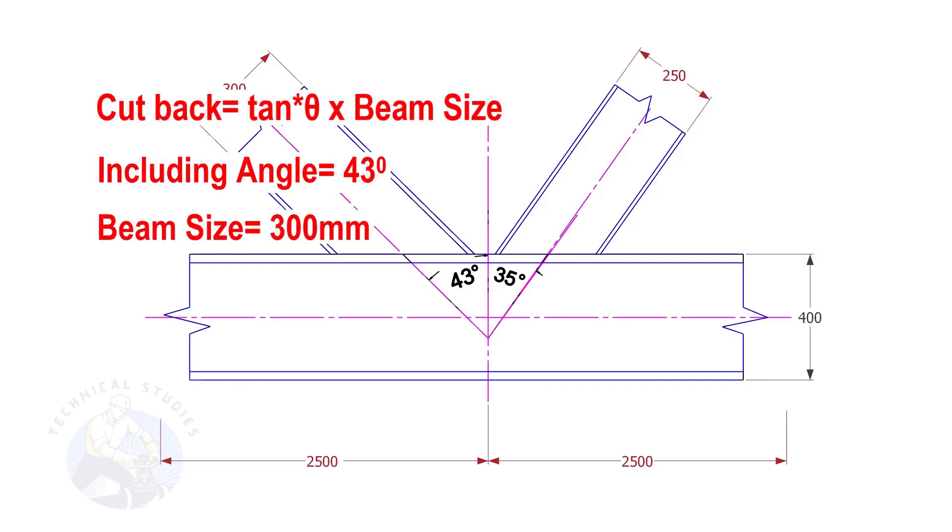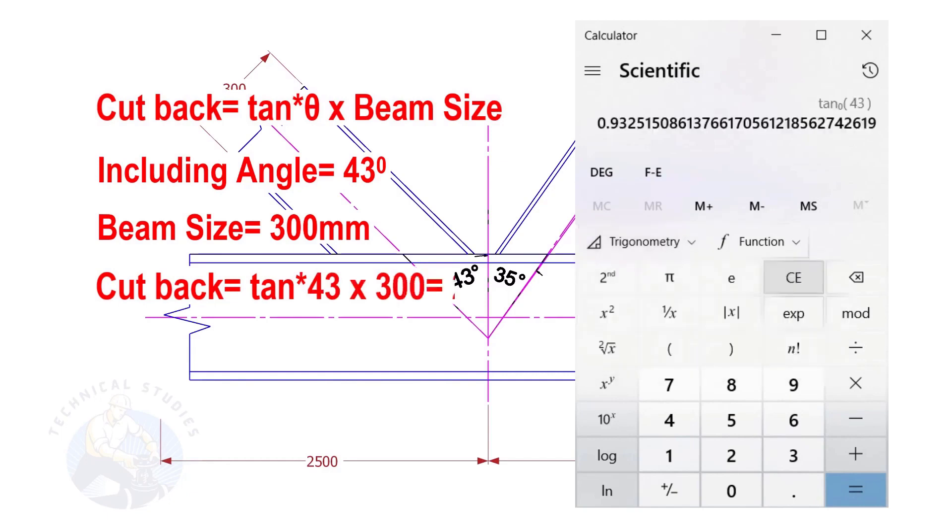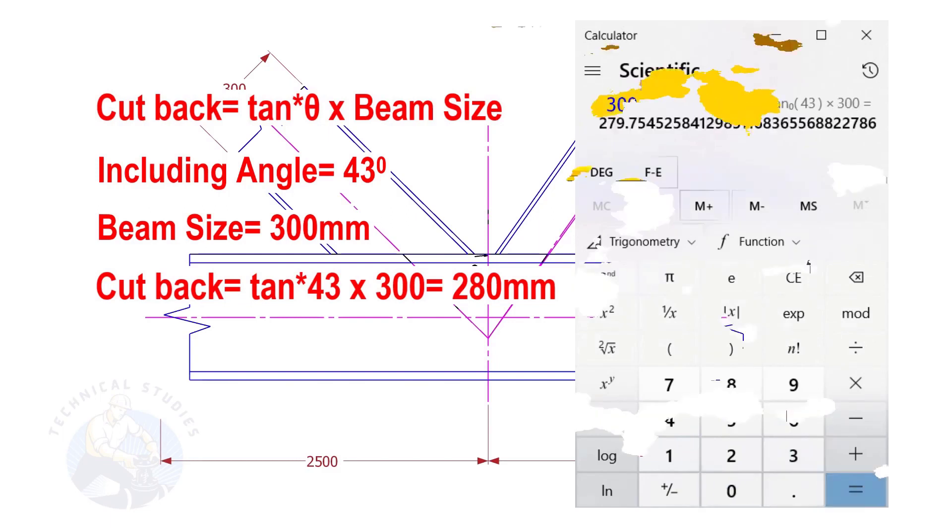the cutback is tan 43 into 300. The answer is 279.7. Let us write it as 280 millimeters.